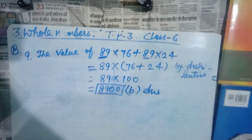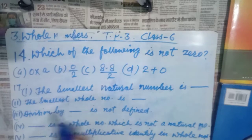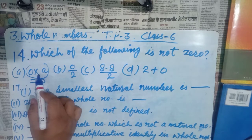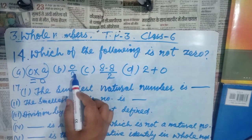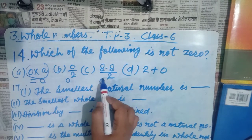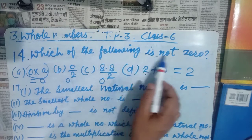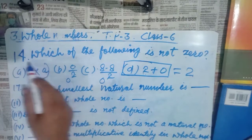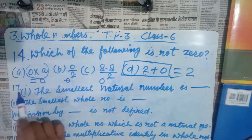Question number 14: which of the following is not 0? Option A: 0 × a = 0 — zero multiplied by anything is zero. Option B: 0 ÷ 2 = 0. Option C: 8 − 8 = 0. Option D: 2 + 0 = 2. The question asks which is not 0, so option D is correct, because 2 + 0 equals 2, not 0.